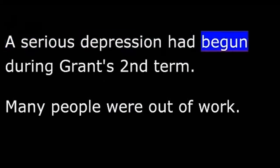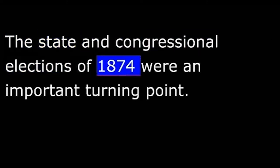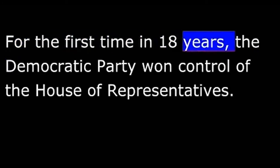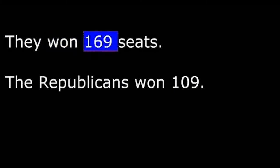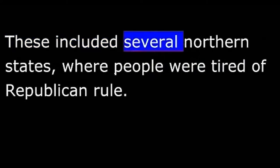A serious depression had begun during Grant's second term. Many people were out of work. They blamed the ruling Republican Party. The state and congressional elections of 1874 were an important turning point. Republicans were shocked by the results. For the first time in 18 years, the Democratic Party won control of the House of Representatives. Democrats also won control of 23 of the 35 state governments, including several northern states where people were tired of Republican rule.